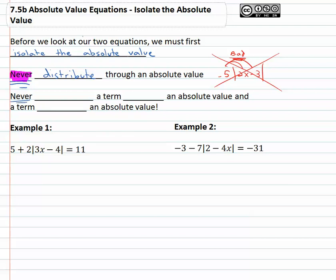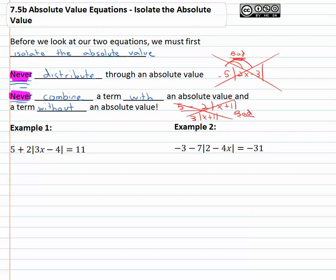Another thing you must never do with absolute value is combine a term with an absolute value and a term without an absolute value — that doesn't work either. For example, taking five minus two times the absolute value of x plus one and combining the five and negative two to get three times the absolute value of x plus one — that's bad. Never do that because five and negative two are not like terms; the two has an absolute value, the five does not. If they're not like terms, we're not allowed to combine them. So make sure you avoid those two things: never distribute through an absolute value, and never combine an absolute value term with a non-absolute value term.